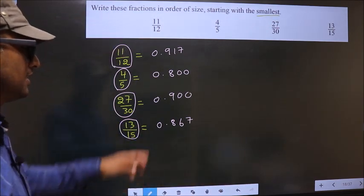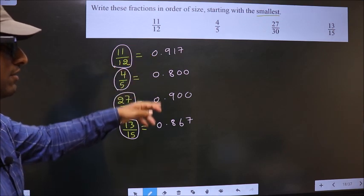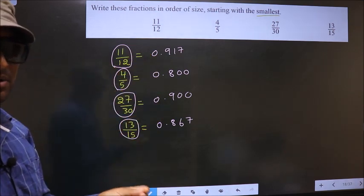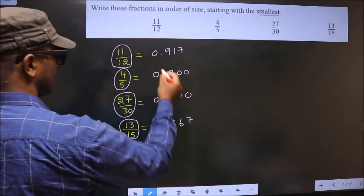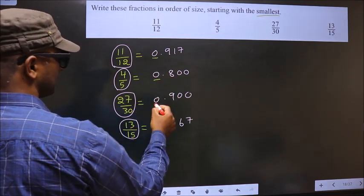Now it is easy for us to find the smaller from this. How do we find it? See, we start from this side. Here we have 0, 0, 0, 0.